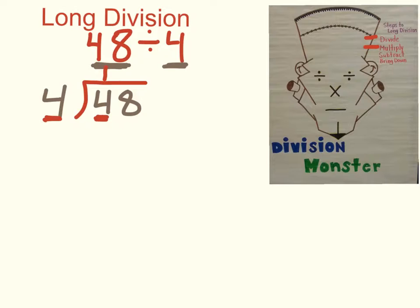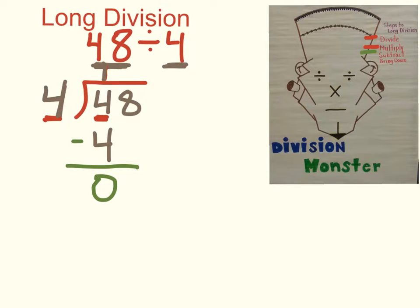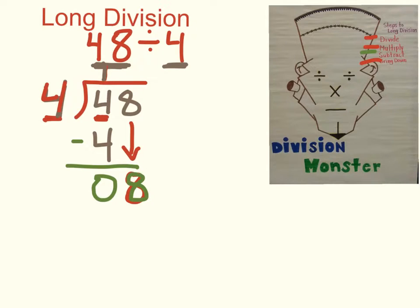The second step is to multiply. What is 1 times 4, our divisor? The answer is 4. Then the next step is to subtract: 4 minus 4 is 0. The last step from the division monster is bring down, which means I bring down the next number. Now I have 8, so now I'm dealing with how many times 4 can go into 8. That's 8 divided by 4, which is 2. I put a 2 above where I'm working with the 8.